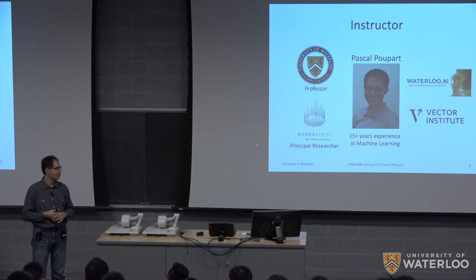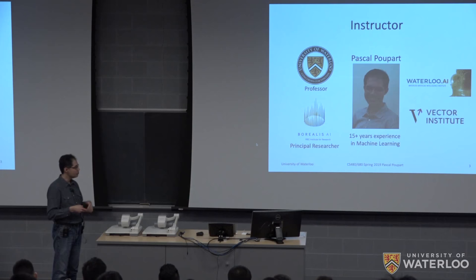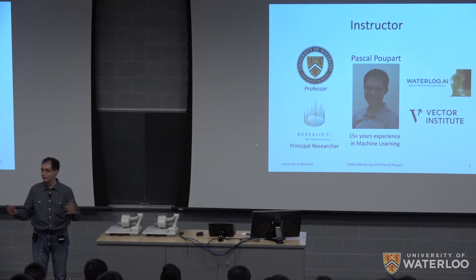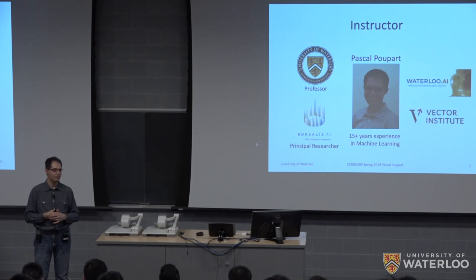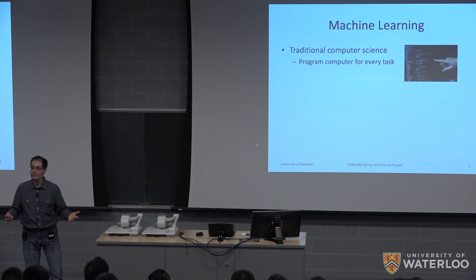I'm a professor at the University of Waterloo, and I also happen to be a member of the Waterloo AI Institute and the Vector Institute. We are at a special time in history where AI and machine learning specifically have drawn a lot of interest. Now let me get into the meat of this course: machine learning. The first question might simply be, what is machine learning, and how does that relate to computer science in general?